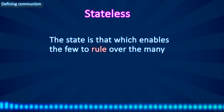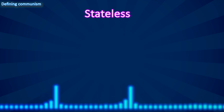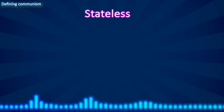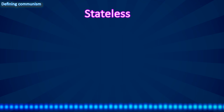In the communist definition of communism, this no longer exists. Instead of people being ruled by a state, people govern themselves. Everyone is free to participate in making decisions on issues that affect them, and no group is given the power to force others to obey its will.